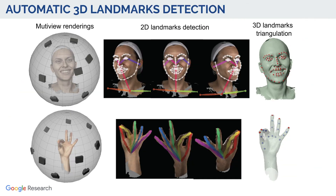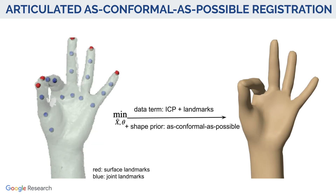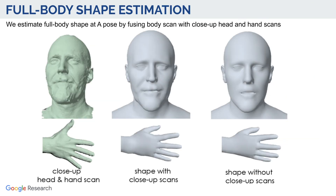Here we illustrate our registration process. We obtain 3D landmarks automatically by detecting key points in point clouds rendered in multiple views and triangulating those. We then optimize both the rest shape and the pose using articulated as-conformal-as-possible optimization. A full-body rest shape with a high level of detail for each subject is estimated by fusing neutral body scans and close-up head and hand scans.